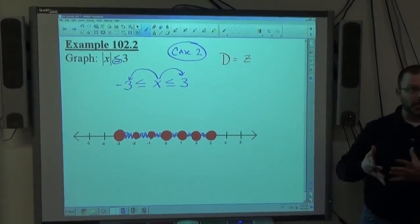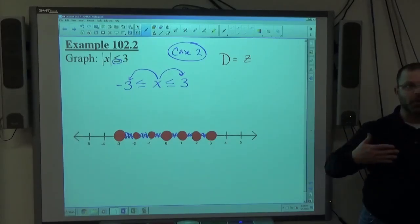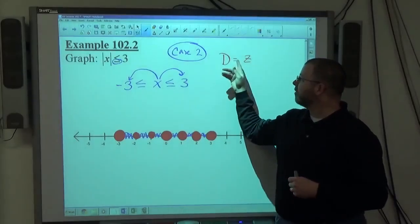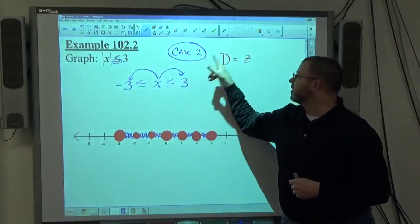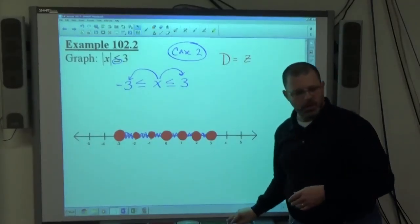If they happen to say some domain, you already know how to deal with domain, deal with it the same way. Just graph the part that would be true while filtering through the domain, graphing only what they're asking to graph.